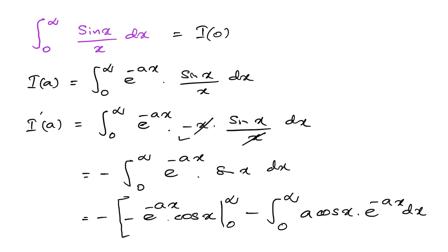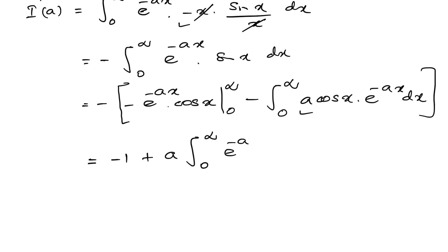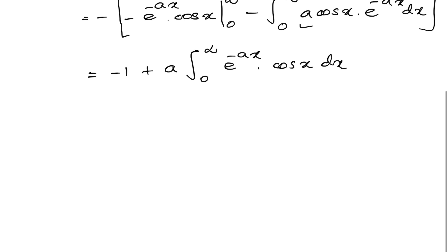Plugging in the limits gives −1, and then plus a times the integral from 0 to infinity of e^(−ax) times cos(x) dx. We apply integration by parts again: −1 plus a, then taking e^(−ax) and integrating cos(x) to get sin(x), evaluated from 0 to infinity.